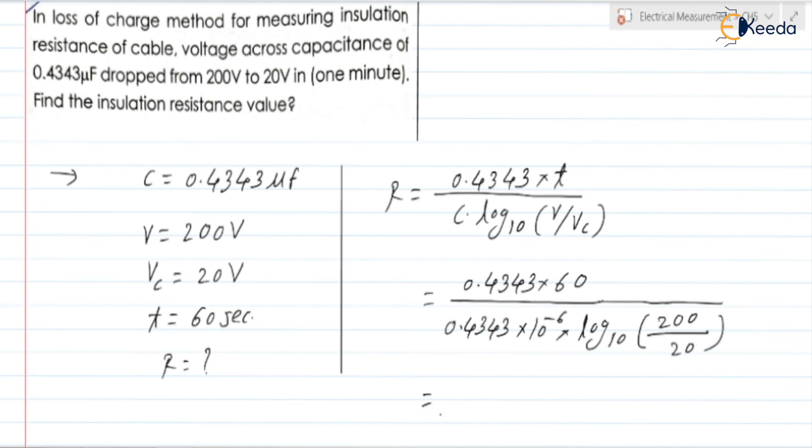So if you check from this we can find the value of resistance. So it will be 0.4343 into 60 divided by 60 mega ohm. 60 into 10 to the power 6 ohm or 60 mega ohm.